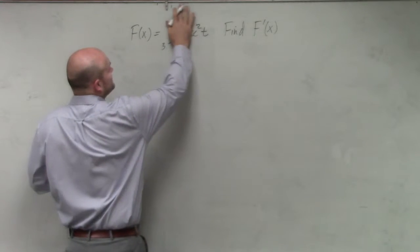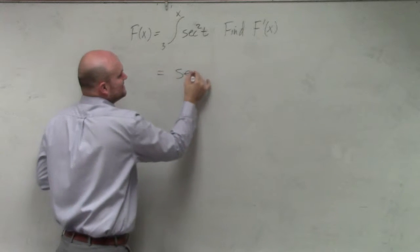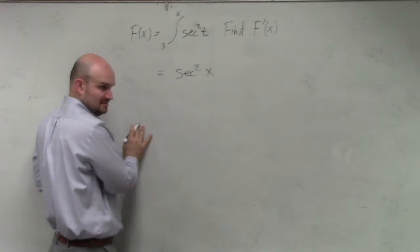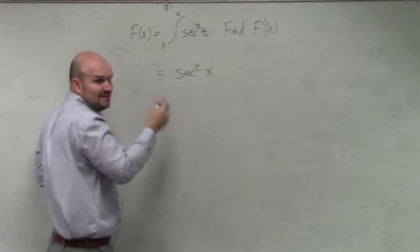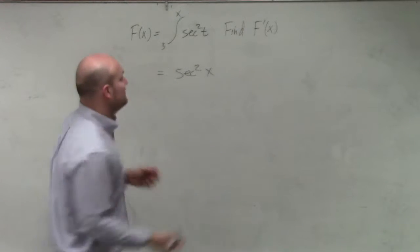if this was just x, then we know it's just going to end up giving us secant squared of x, right? So why go through all the steps of integrating and differentiating if we know we're just going to get back to secant squared of x? But the difference is,